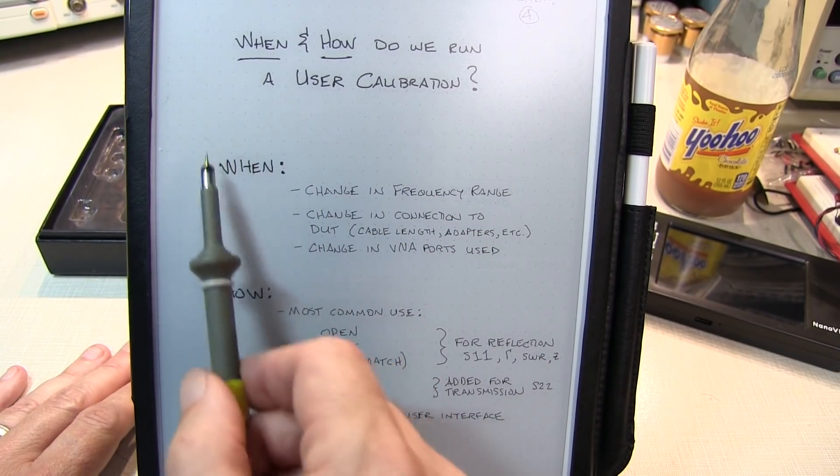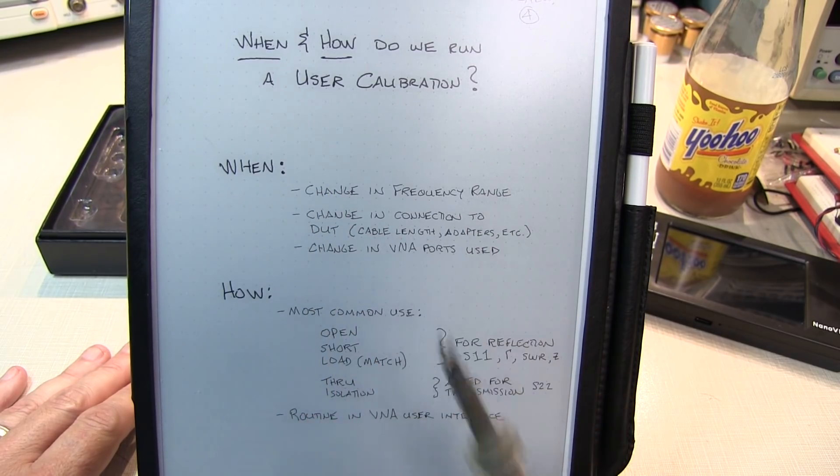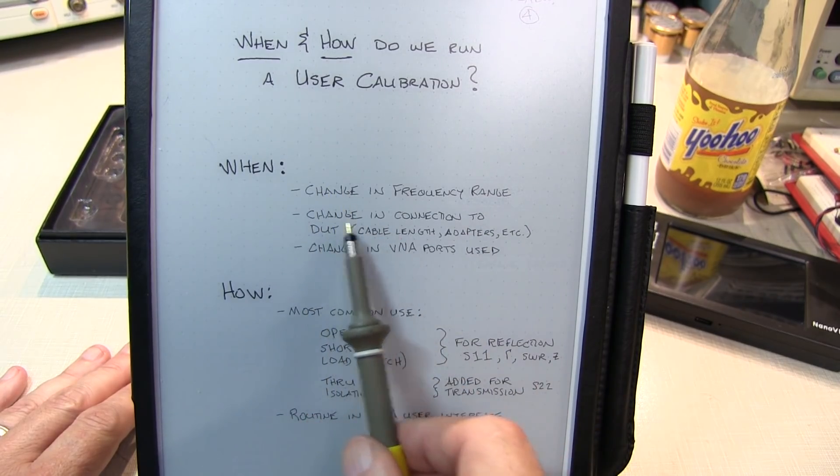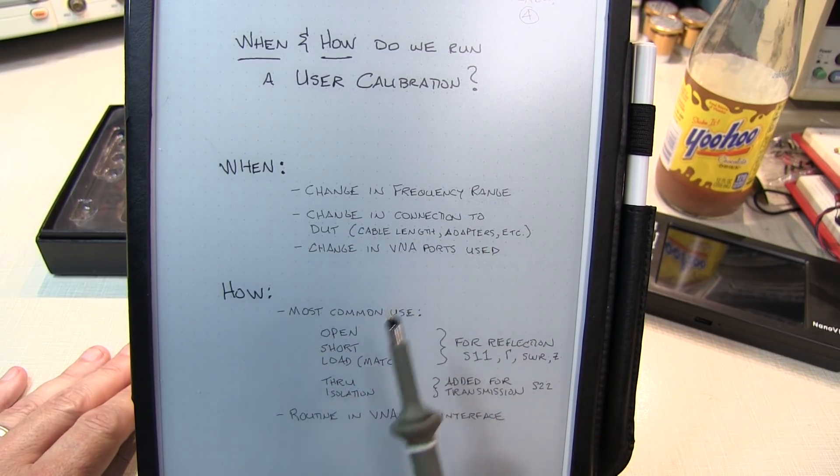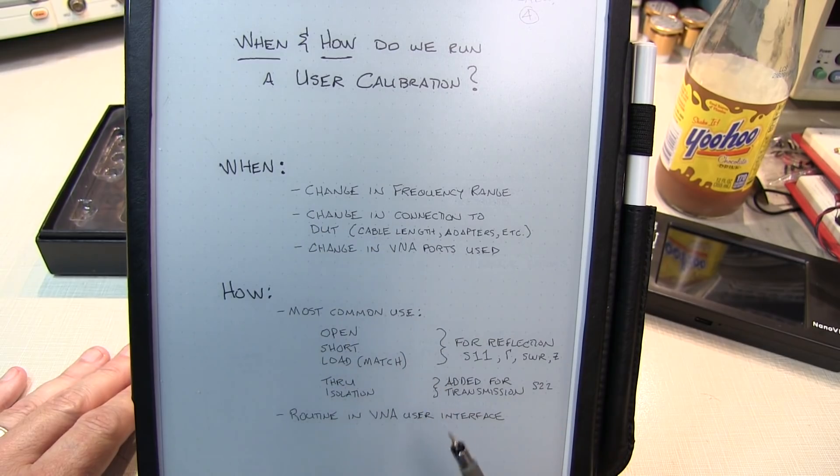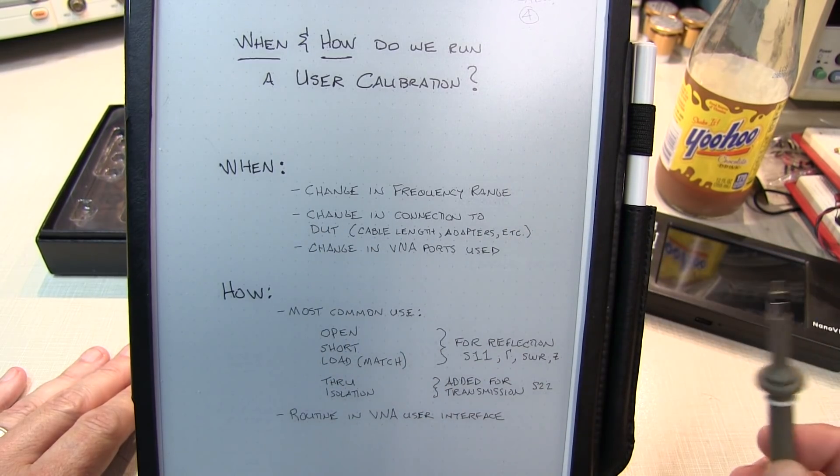So when and how do we run a user calibration? Well, when we want to run a user calibration, it's whenever we make a change in the frequency range that we're going to be measuring, a change in the connection to the DUT, maybe a different set of cables, a different set of adapters, or if we're changing the ports that are being used in the VNA. Any of these conditions, basically any time you set up for a new test, you'll want to run a user calibration.